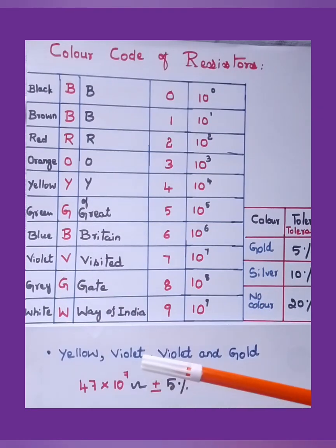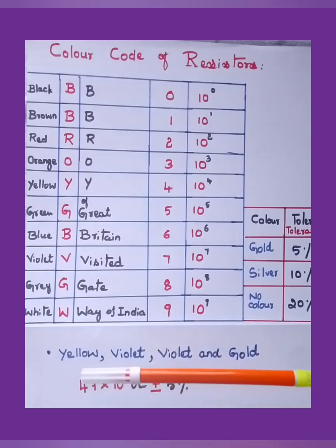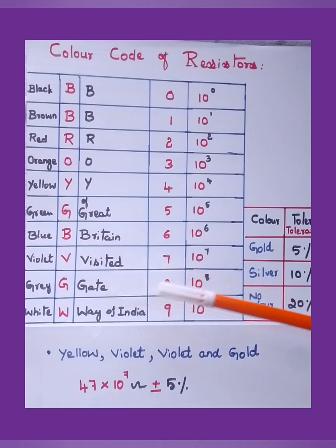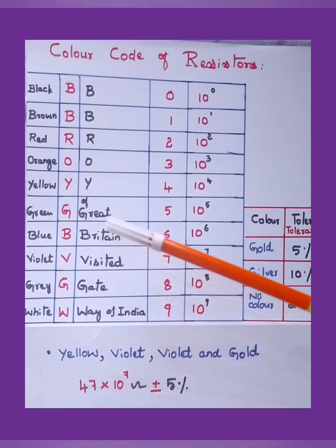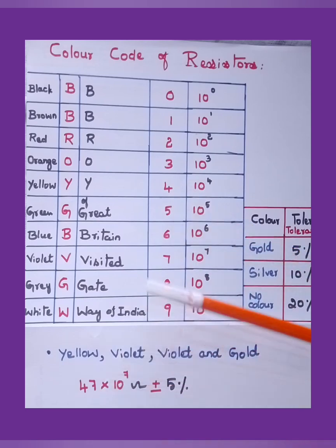Suppose if the color codes are given like this: yellow, violet, violet, and gold. For the first three colors we need to find the color code resistance value, and then the tolerance for the last one. For the first two we need to check for the single digit. For yellow, what is the number? It is 4. Violet is 7. So 4, 7. For the third color we need to take the multiples of 10. Again for violet, 10 to the power of 7. So 47 into 10 to the power of 7 ohms. Plus or minus, for gold, what is the tolerance? It is 5 percent. Hence, 47 × 10^7 ohms ± 5% is the answer.